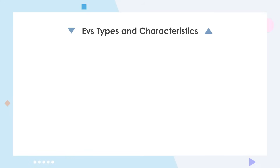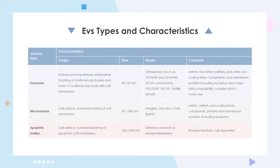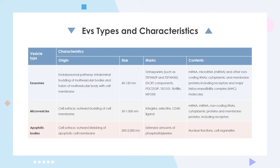Before we get started, let's first briefly go through some background. Extracellular vesicles are classified into exosomes, microvesicles, and apoptotic bodies according to their origin, size, content, and corresponding markers. The specific information is shown in the table.